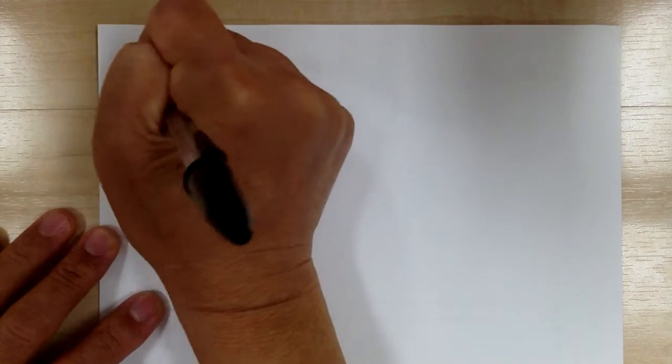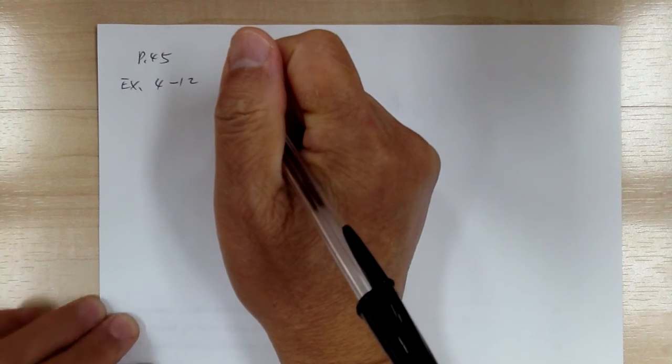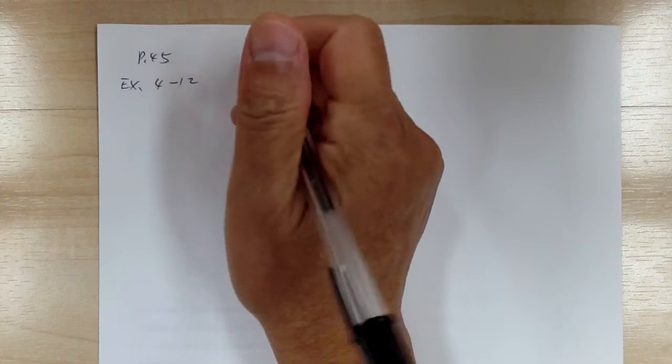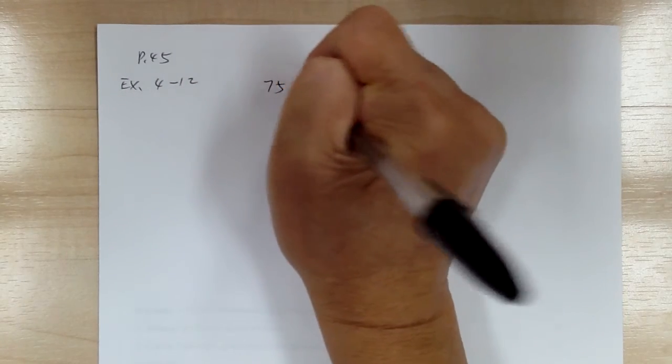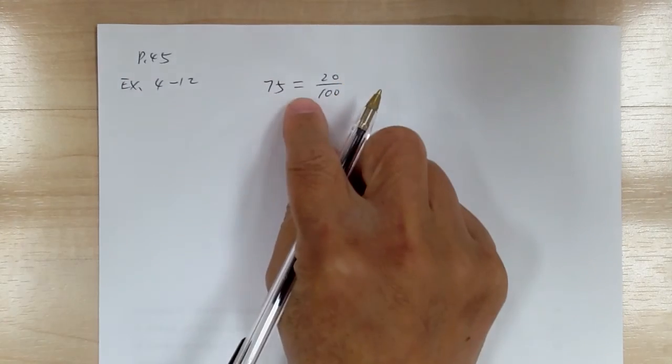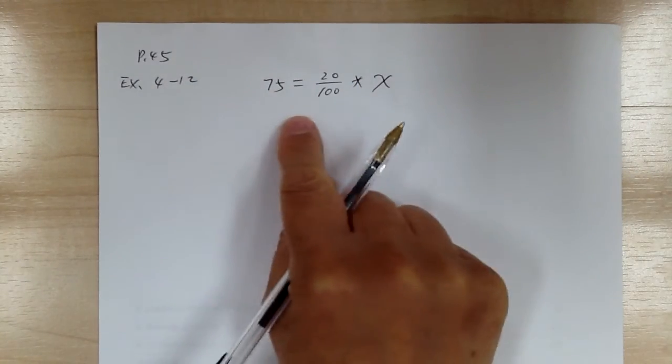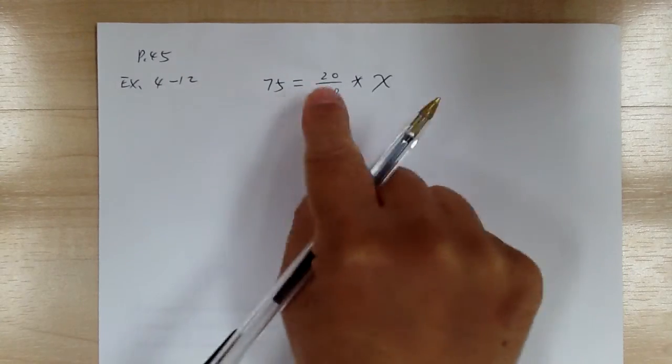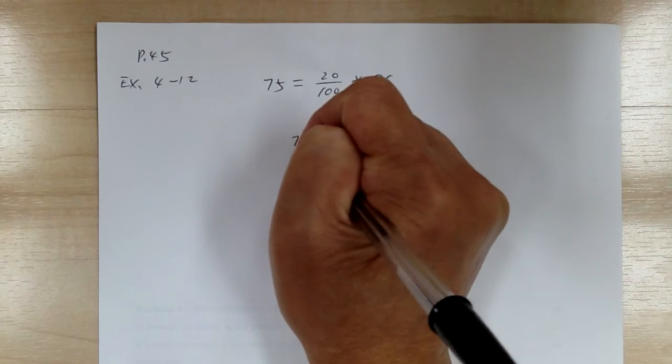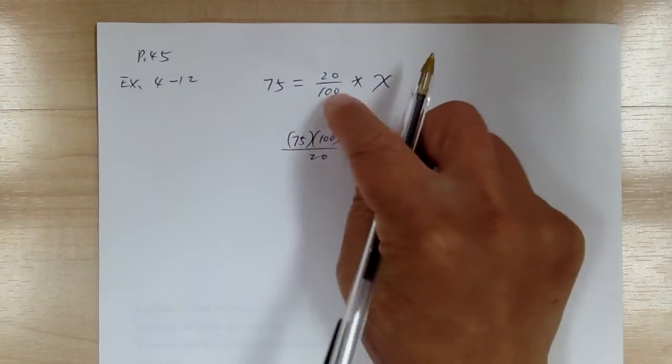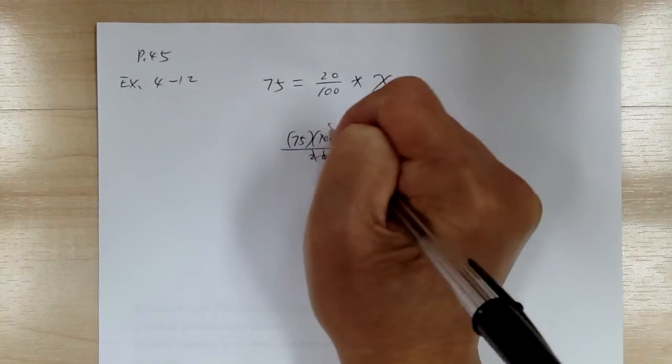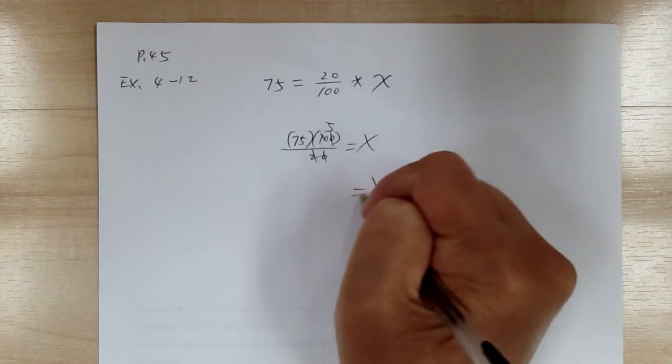Let's go to example 4-12. Now for this one, you want to be careful when you translate. So it says 75 is means equal, 20% means 20 over 100. So 75 is 20% of means times one number so that's your x. Make sure you know how to translate. Now to solve this, you just go ahead and move things around. So you're going to get 75 times 100 over 20. Move this over, move this down. So cancel, cancel. So x equal to 375.